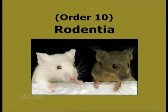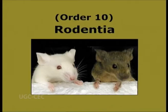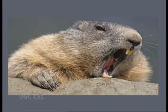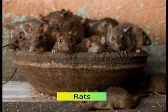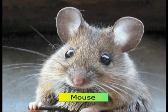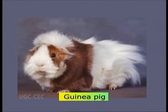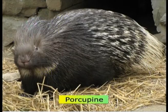Order 10: Rodentia. Rodo meaning gnaw. This is the largest order of class Mammalia, including small gnawing animals. Each jaw has one pair of long, rootless, chisel-like incisors growing throughout life. No canines are found. Examples are rat, mouse, guinea pig, beaver, porcupine, and prairie dogs.